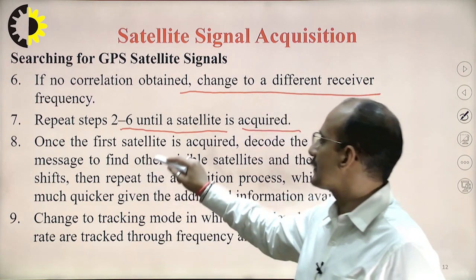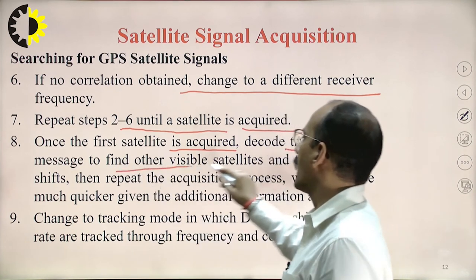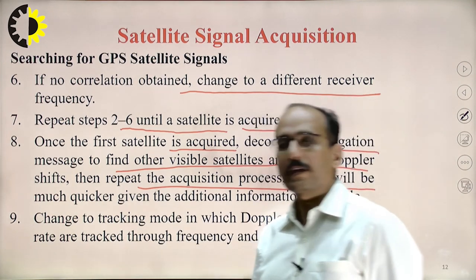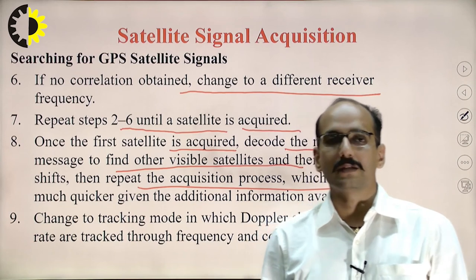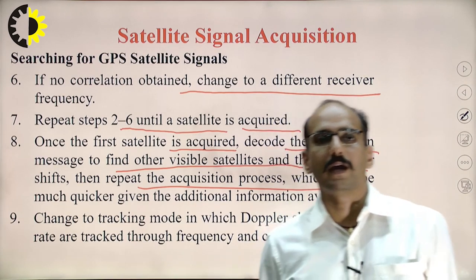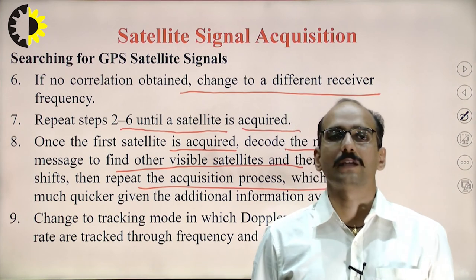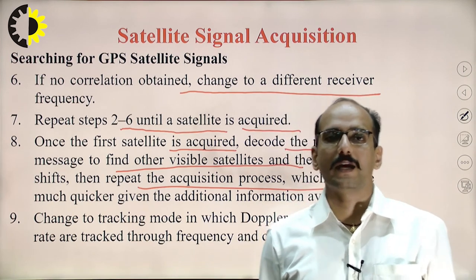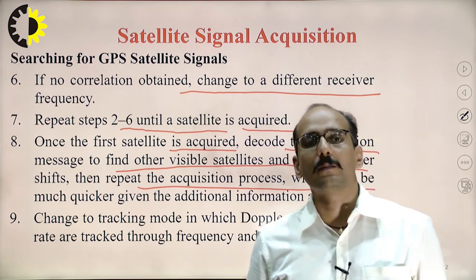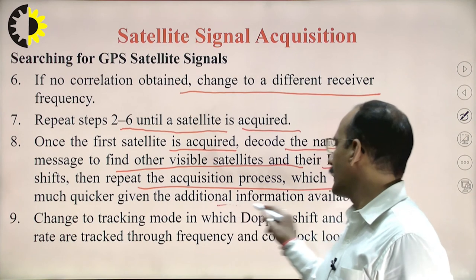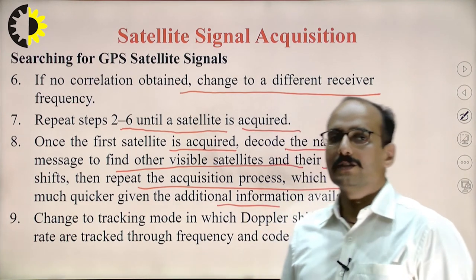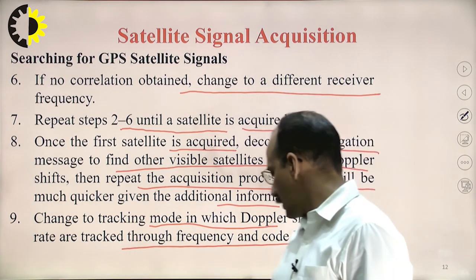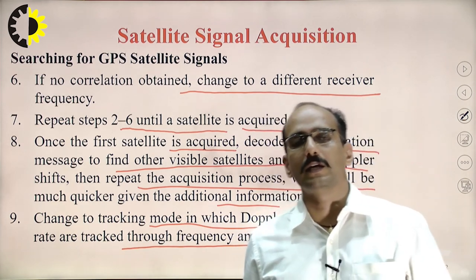Repeat steps 2 to 6 until a satellite is acquired. Once the first satellite is acquired, decode the navigation message to find other visible satellites and their Doppler shift. Then repeat the acquisition process, which will be much quicker given the additional information available. After that, change to tracking mode in which the Doppler shift and code rate are tracked through frequency and code loops.